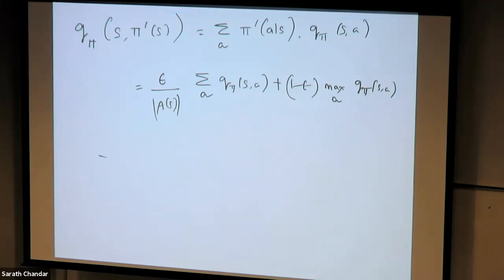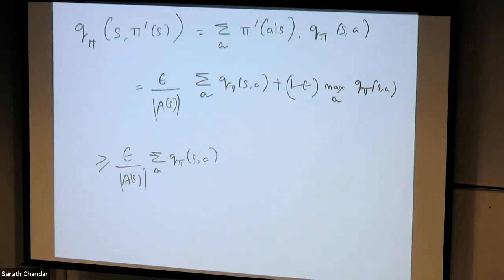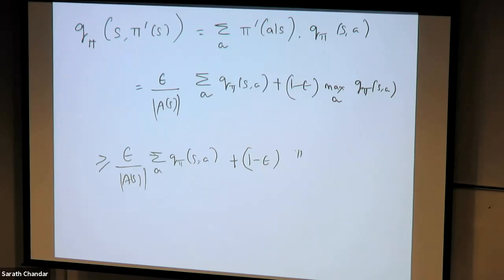This expression is greater than or equal to keeping the first term as (epsilon / |A|) times summation over a of q_pi(s, a), plus (1 - epsilon) times a weighted combination of all q-values, where the weight is given by [pi(a|s) - epsilon / |A(s)|] divided by (1 - epsilon), times the summation over a of q_pi(s, a).